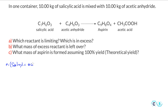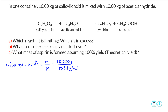The moles of salicylic acid equals the mass over the molar mass, so this is 10,000 grams over the molar mass of salicylic acid, which is 138.1 grams per mole. Cancel the grams, and we have 72.4 moles.